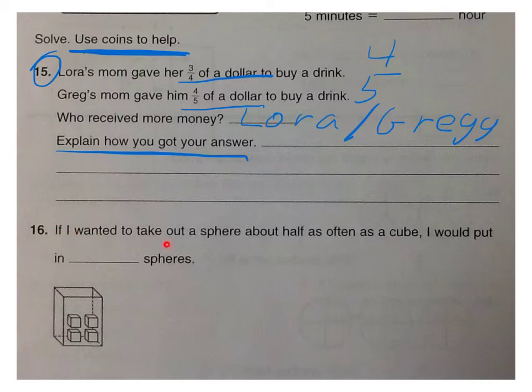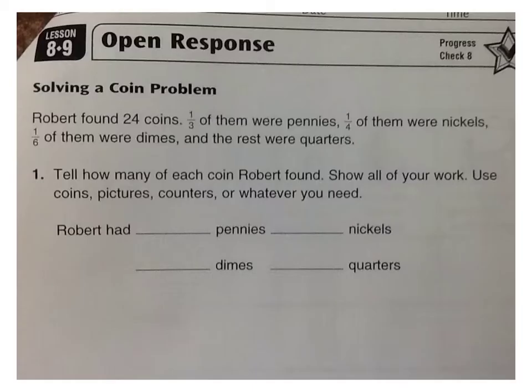If I wanted to take out a sphere about half as much as a cube, I would put in blank spheres. Notice there are 4 cubes. I want to take out half as many spheres. Half as many spheres. So how many would I put in?